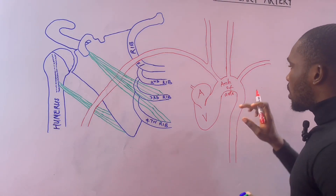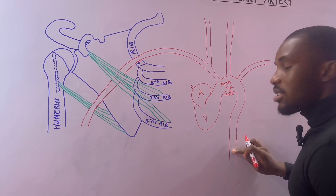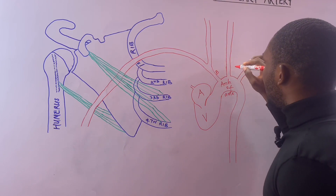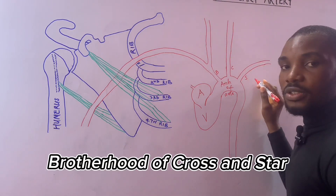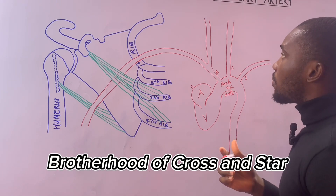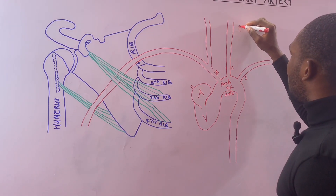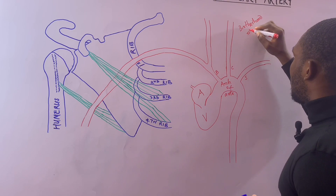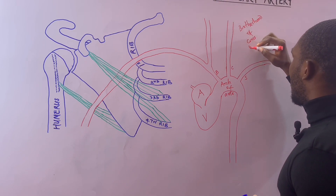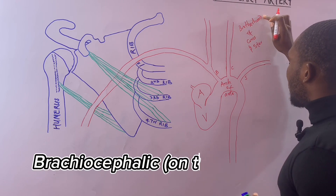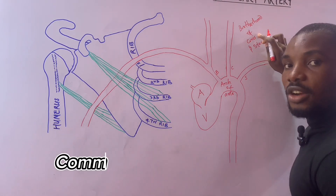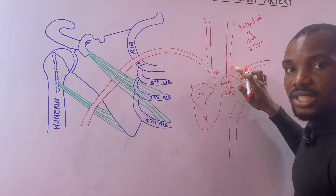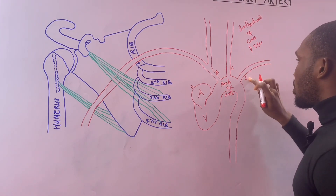From the arch of aorta there are three branches. The mnemonic is 'Brotherhood of Cross and Star': Brotherhood = Brachiocephalic, Cross = Common Carotid, Star = Subclavian. So we have the brachiocephalic, the left common carotid, and the left subclavian artery.